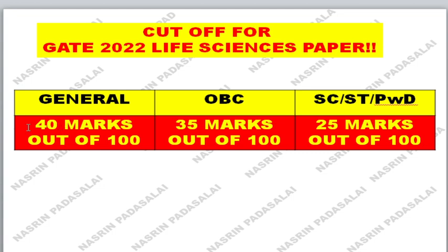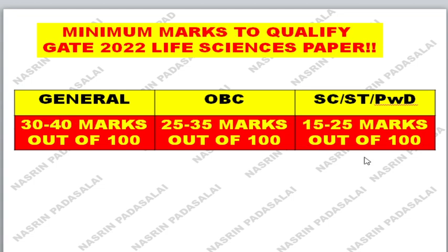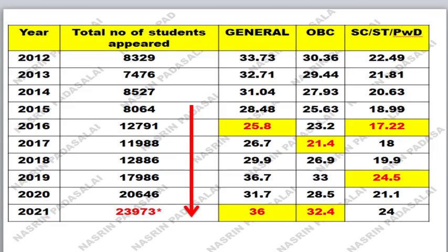If you are below 40 marks, you are on the borderline — there is a 50% chance you will clear and a 50% chance you won't. If you are getting more than 40 marks, there is a near 100% chance you will clear the GATE Life Sciences paper. Looking at previous cutoff trends, the highest cutoff ever reported was in 2021, which was 36 marks out of 100 — and even that year the paper was very easy.